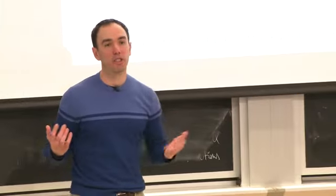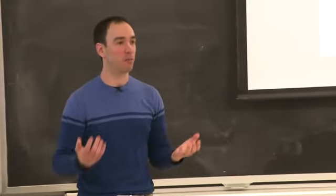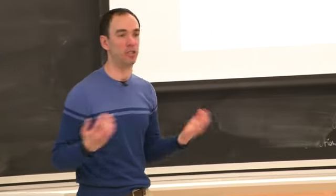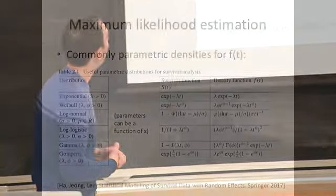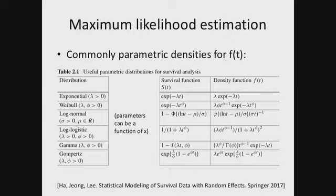A key question in parametric survival modeling is: what should f of t look like? Here's a table of commonly used density functions. The right-hand column is the density f of t, lambda denotes a model parameter, t is time, and the middle column is the survival function — the analytic solution obtained by integrating from t to infinity. These go by common names: exponential, Weibull, log-normal, and so on. Critically, all of these have support only on the positive real numbers, since events can never occur at negative time.